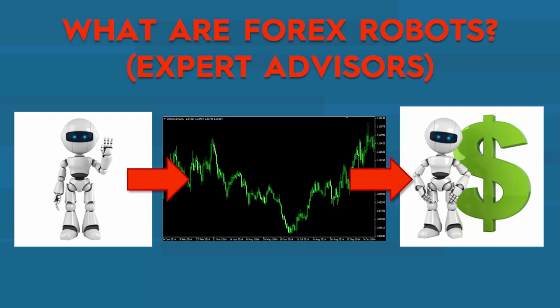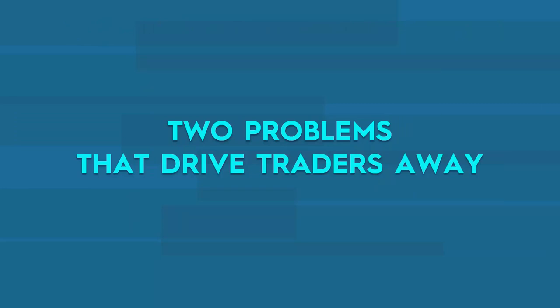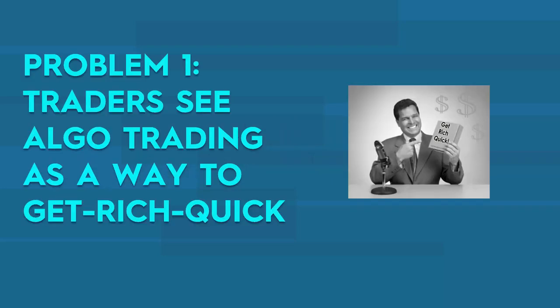Forex robots are really great to know how to use, however they come with two problems that drive traders away from them. Problem number one: traders see algo trading as a way to get rich quick. They think — come to the forex market, get a robot from somewhere, put it on my account and I'll be super rich in a month. Very, very wrong.